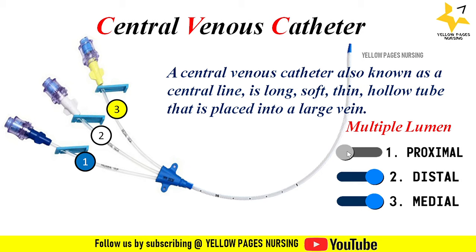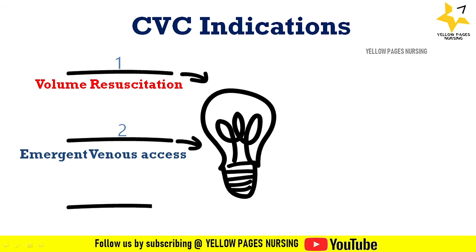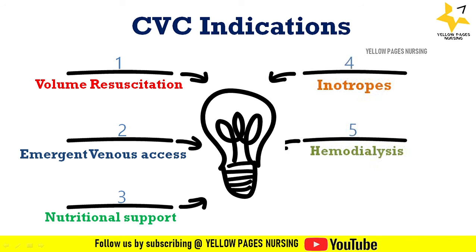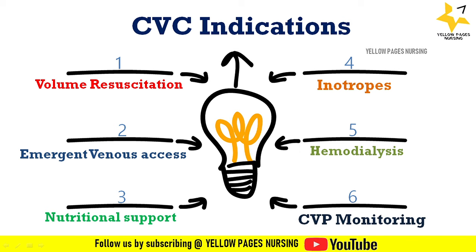What are the indications for inserting a central venous catheter? The first is volume resuscitation — in order to rapidly deliver large amounts of fluid or blood, for example when a person is in shock. Next is emergent venous access for sample withdrawal or for medication administration. Next is nutritional support — in order to deliver nutrition directly into the blood when food or liquids cannot be given through the mouth, stomach, or intestine, for example total parenteral nutrition administration. Next is inotrophs — critically ill patients need support of inotrophs which cannot be given through a peripheral line, and hence in such cases a central venous catheter is indicated.